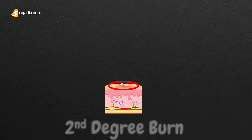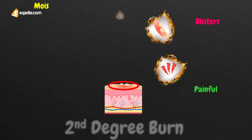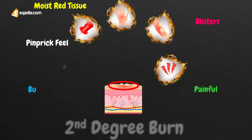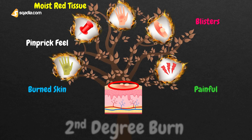If the burn affects the outermost and an additional layer of skin, and is painful, with blisters, has underlying moist and red tissue, and the patient is able to feel pin-prick on burned skin, then it could be a second-degree burn.